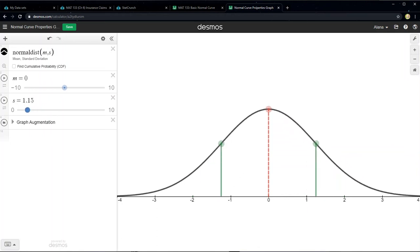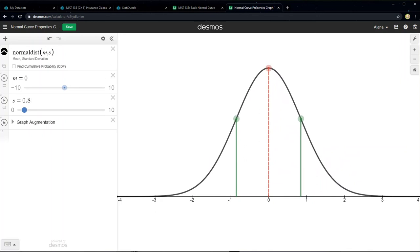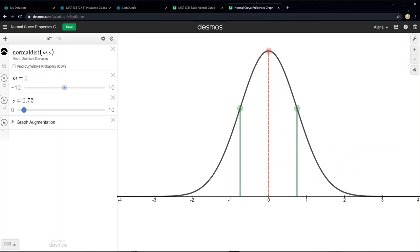And then if I make the mean, or the standard deviation shrink, let me make it 0.75. Look at what happens to that graph. It's taller and narrower, right? And less spread out.